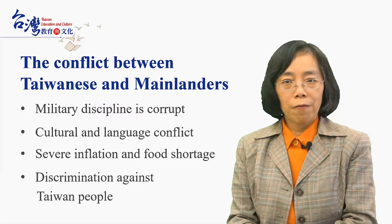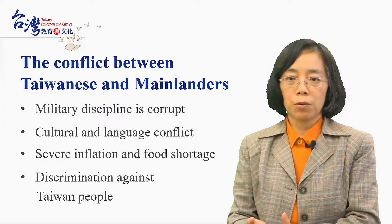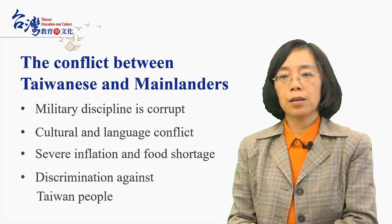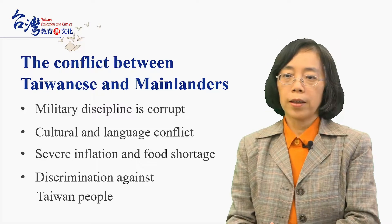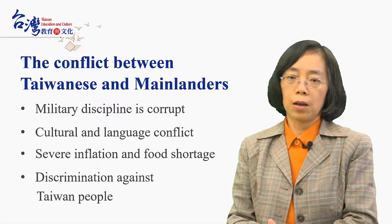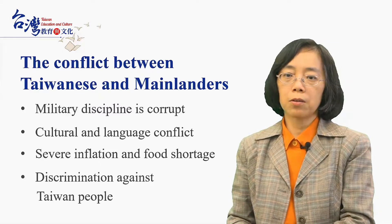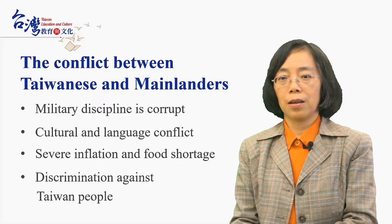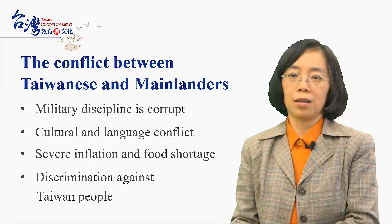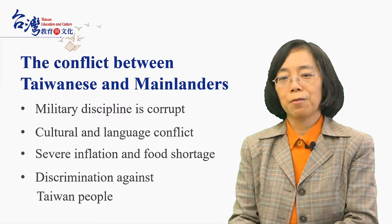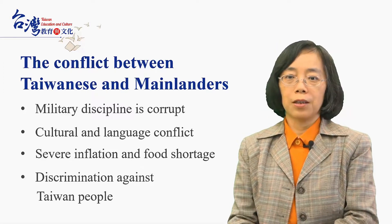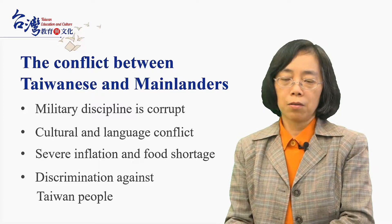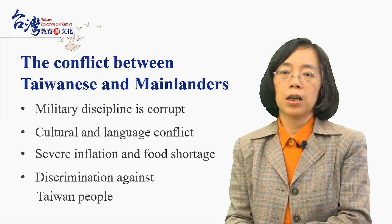There was also discrimination against Taiwanese people. When mainlanders came to Taiwan, they viewed those Taiwanese who could only speak Japanese as second-rate citizens, while the mainland Chinese saw themselves as the rescuers of Taiwan. This created an unfair and discriminatory situation between the two groups.